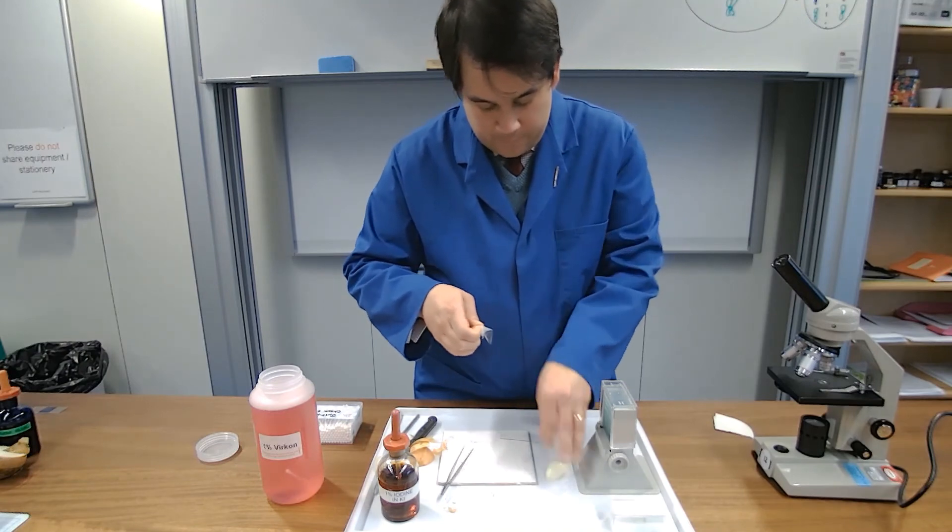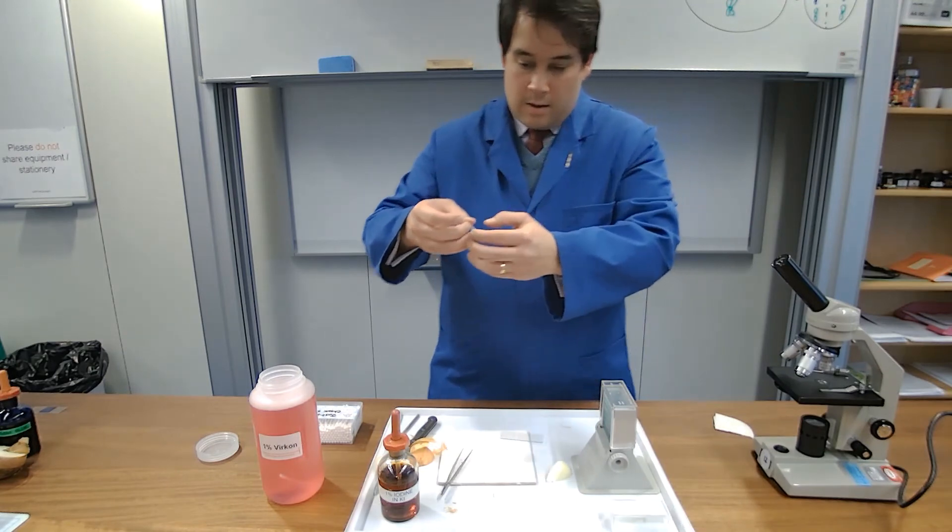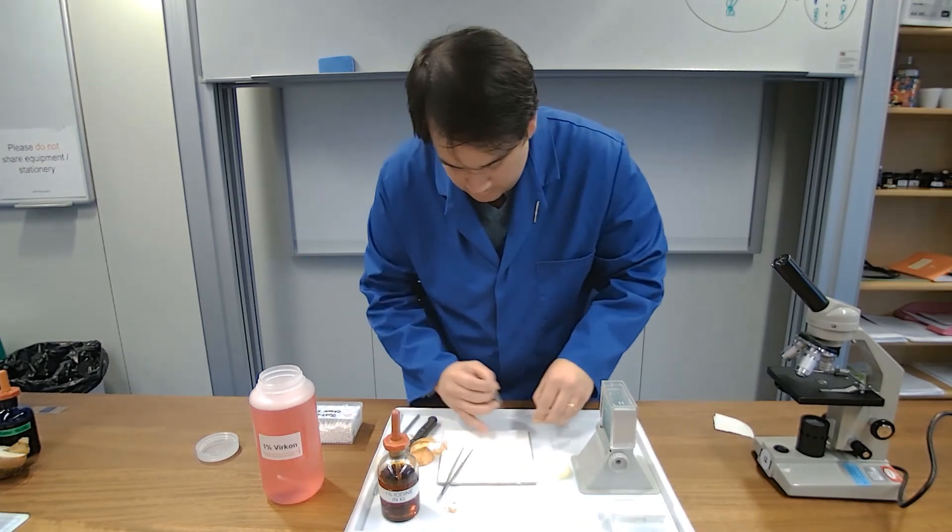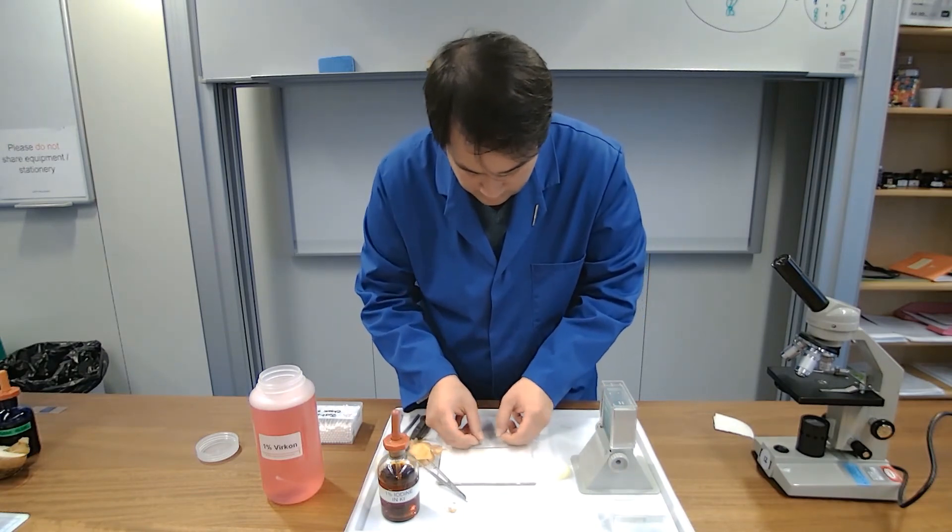So we're taking a very thin layer of the film here out. There we go. A nice thin layer of onion. I'm just going to take a little bit of it actually. This is quite a lot.